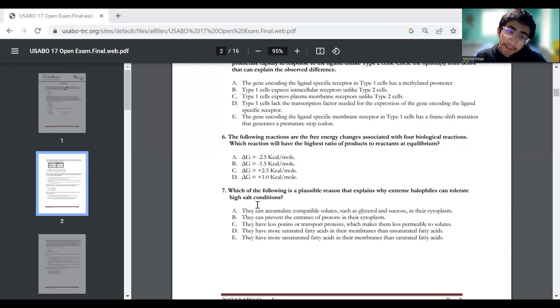I think usually the answer would be compatible solutes, because if you're a halophile in high salt conditions, you don't want to have too much water that goes out of you. So they would have these compatible solutes such as sucrose and glycerol so that they can kind of be similar to the salt environment so that they don't have too much osmosis out of them.